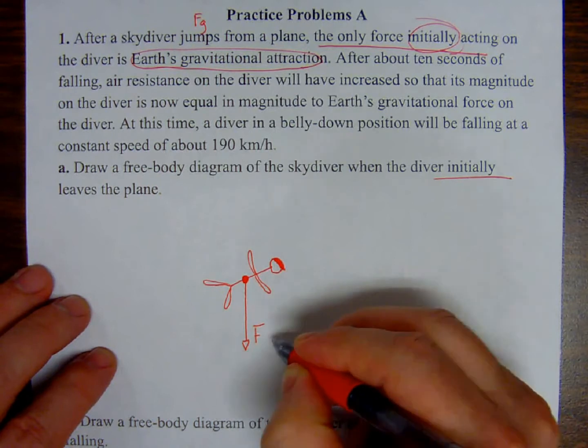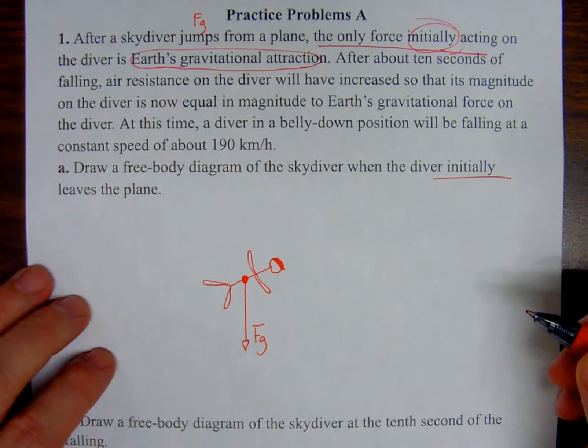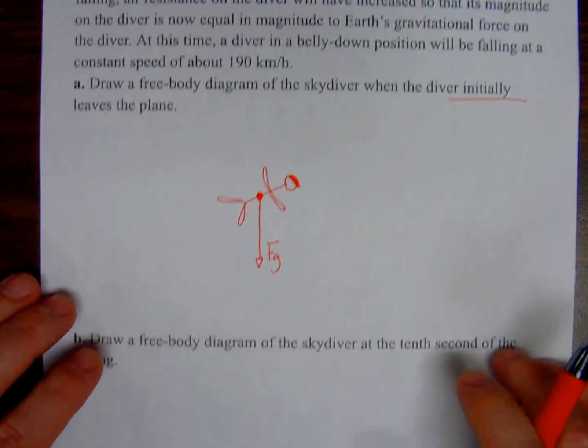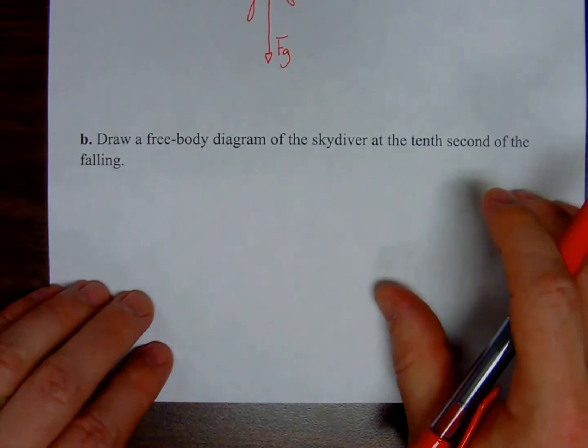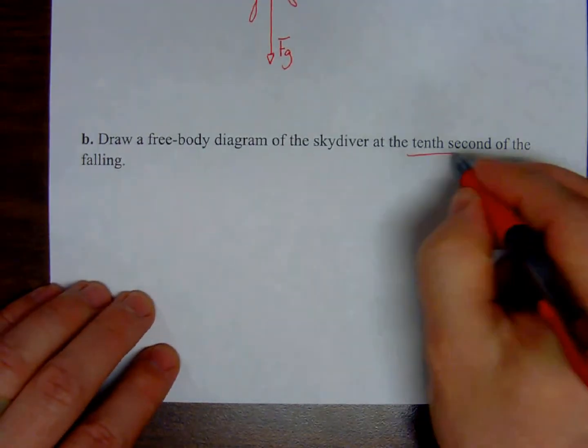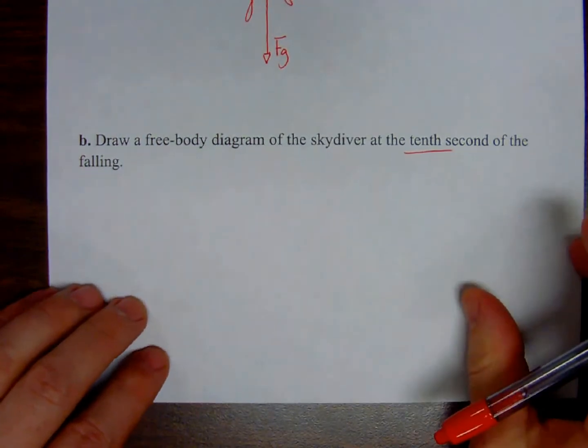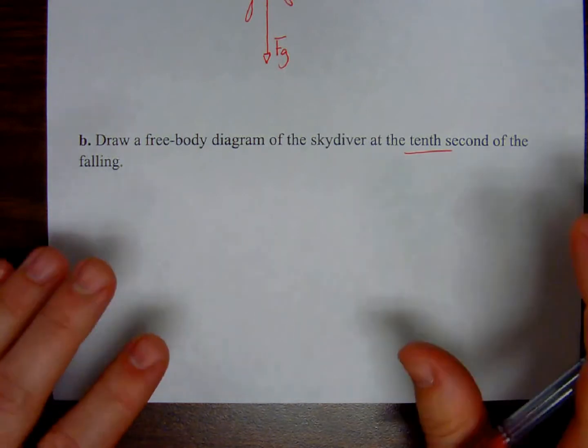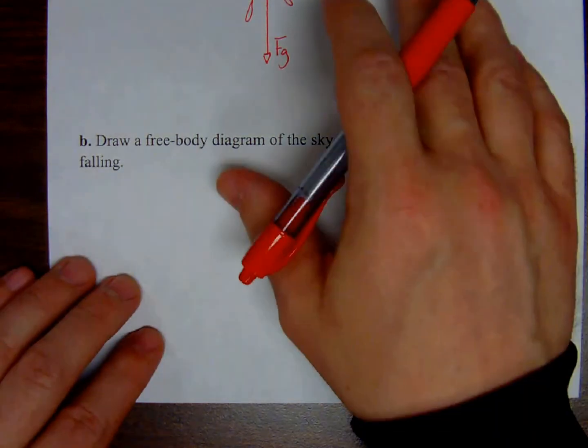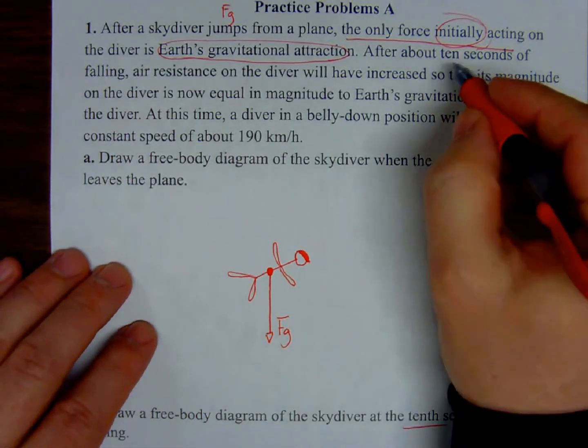Part B, draw a free body diagram of the skydiver at the tenth second of free falling. Now, you might be freaking out. What's so special about the tenth second? Am I supposed to know something about skydiving? What's going on here? No. That's not what we're saying here. Back in the question, after about ten seconds of falling, air resistance on the diver will have increased. Okay? It was zero. Right? There's no air resistance to start here. You just left the plane.